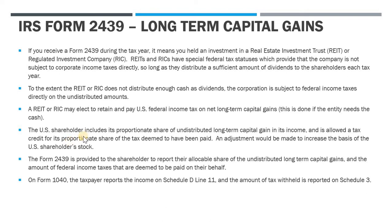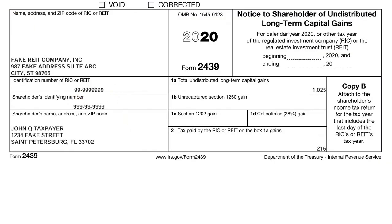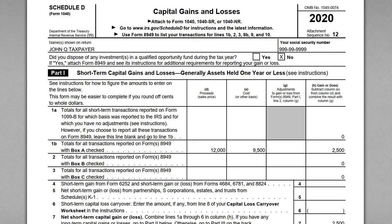For this video I wanted to cover the IRS Form 2439. These are issued by REITs or RICs to represent undistributed long-term capital gains that are still included in income and subject to tax by the shareholders. I've got one slide that covers some of the rules, a sample 2439, and a tax return for an individual showing how it's reported and how you get credit for the tax.